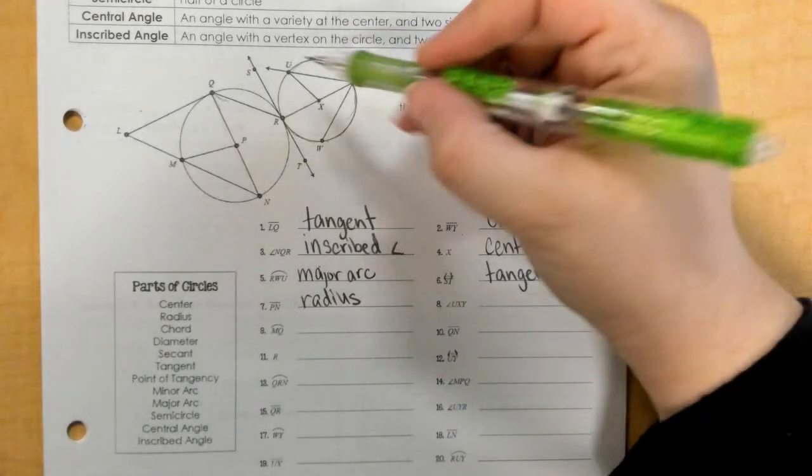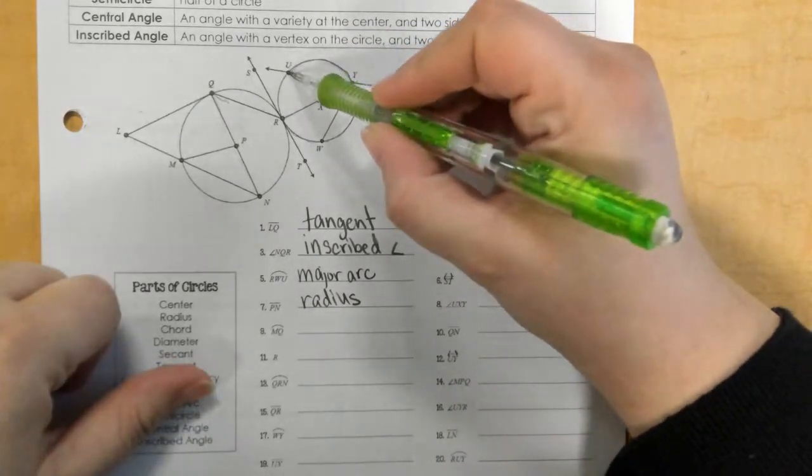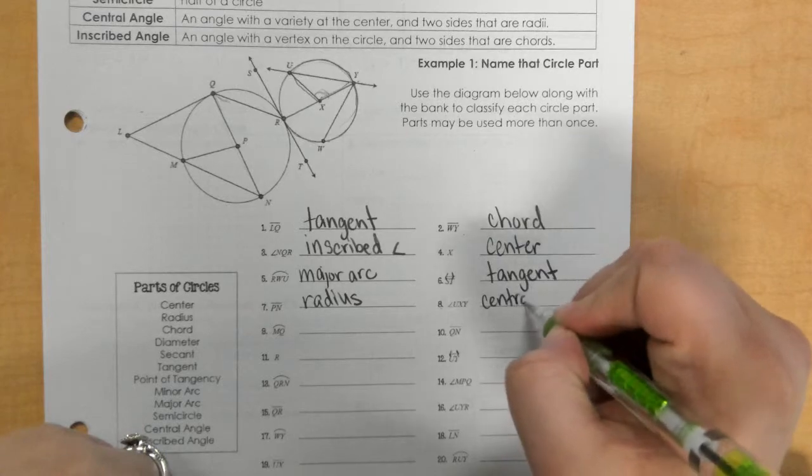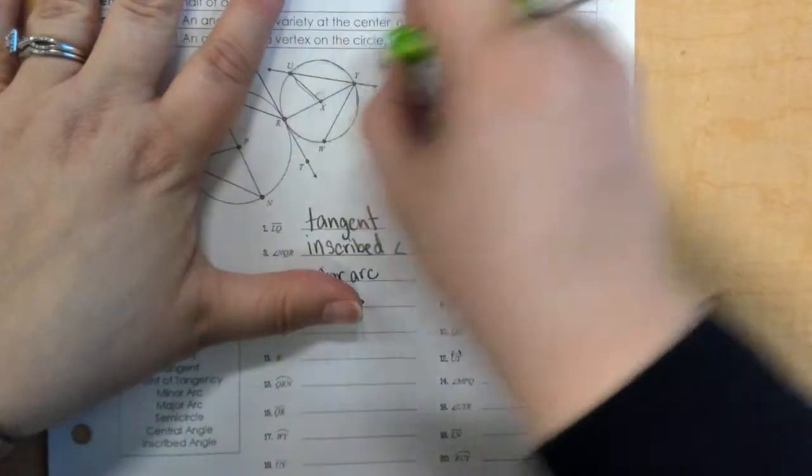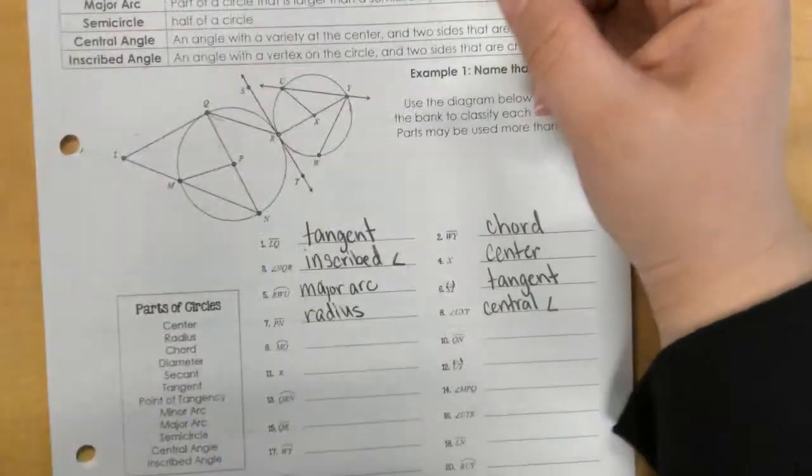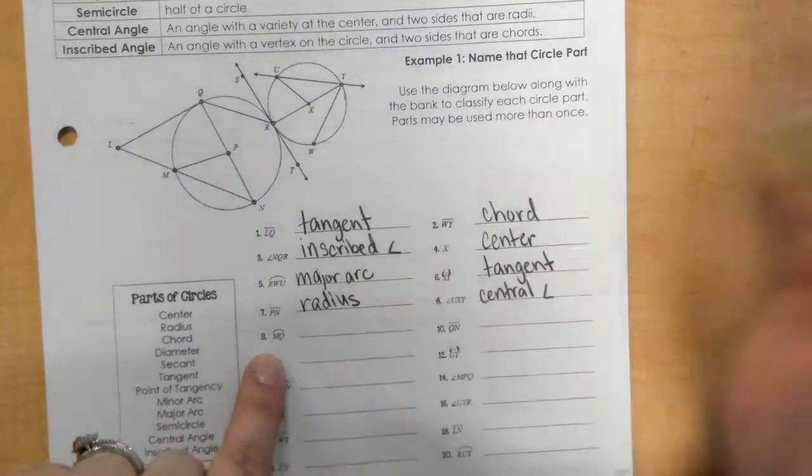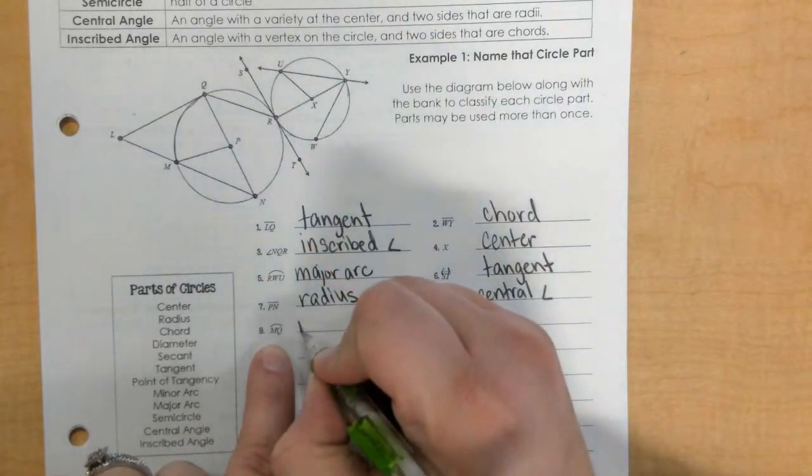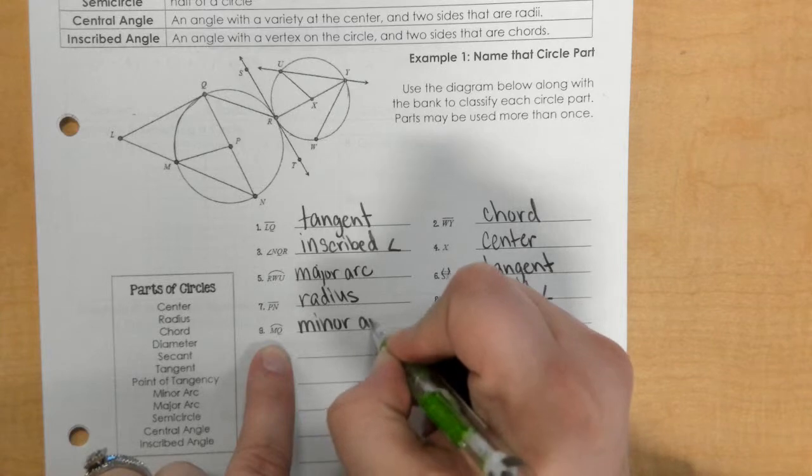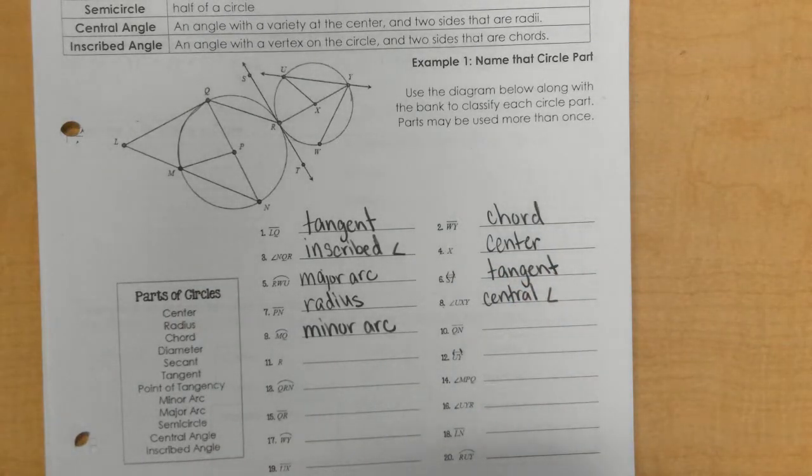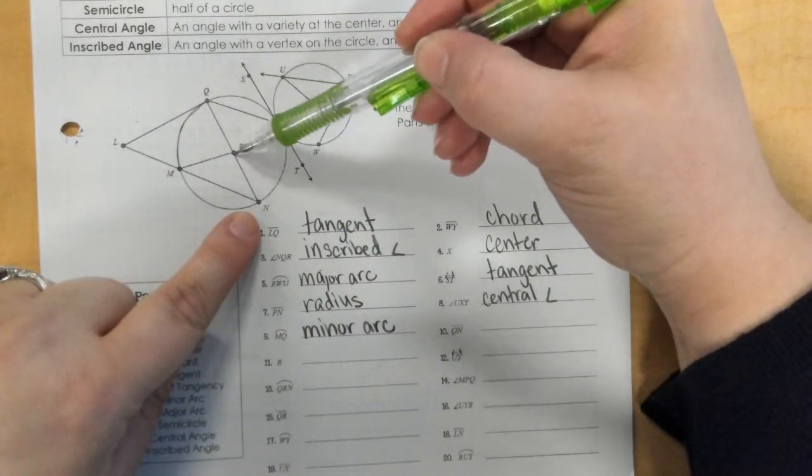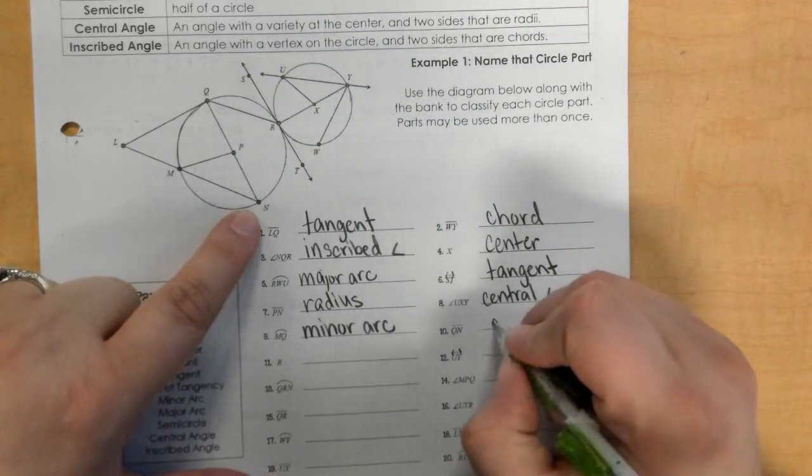Number eight, angle UXY. Okay, so this one we're looking at this angle here, central angle, because it's in the center. Well, the vertex is in the center. All right, next, number nine, arc MQ. So here's M and here's Q, and this is a minor arc. Okay, so it only has two letters. Number 10, QN. So here's Q and N, so this goes through the center, one point to the other on the circle. That is definitely a diameter.